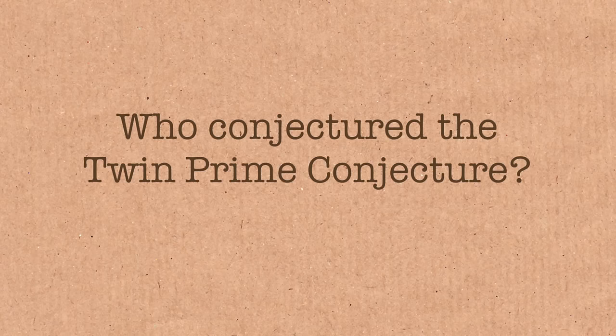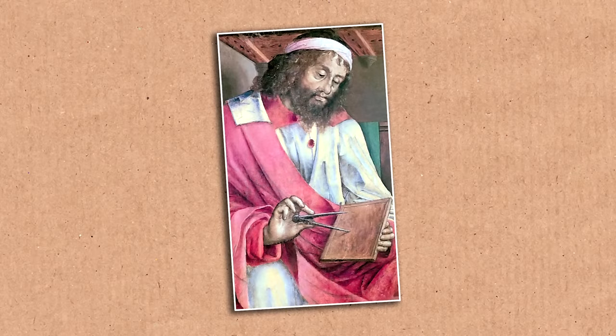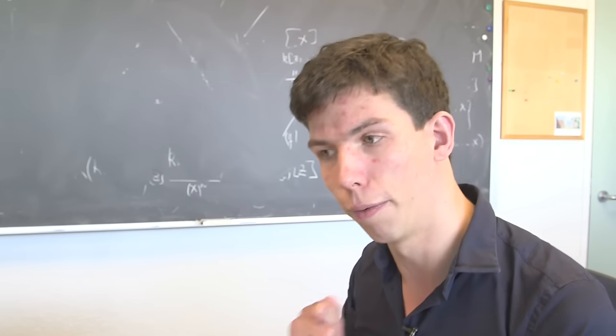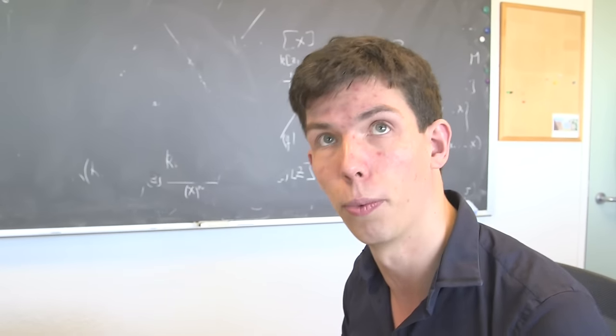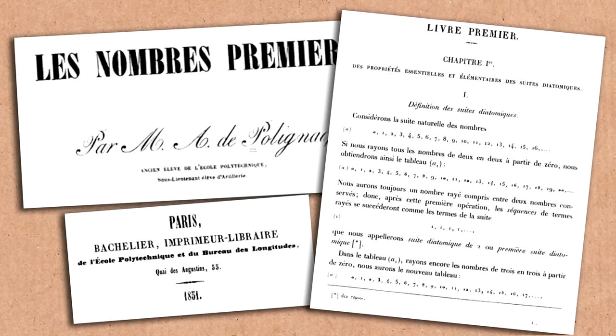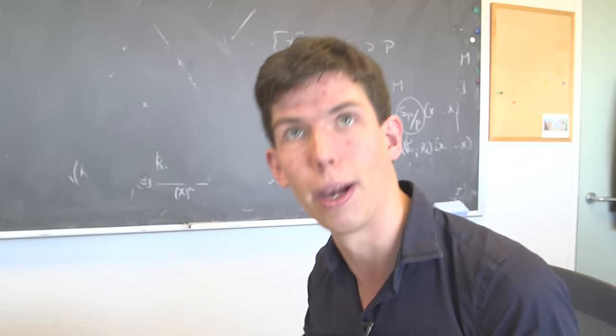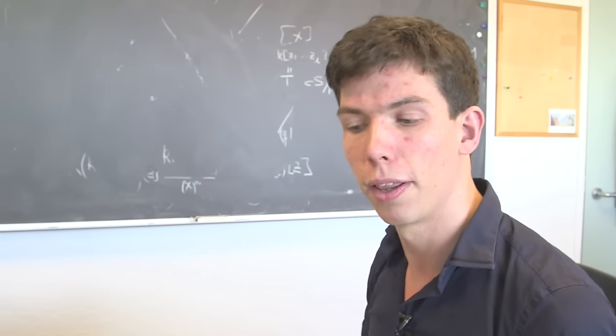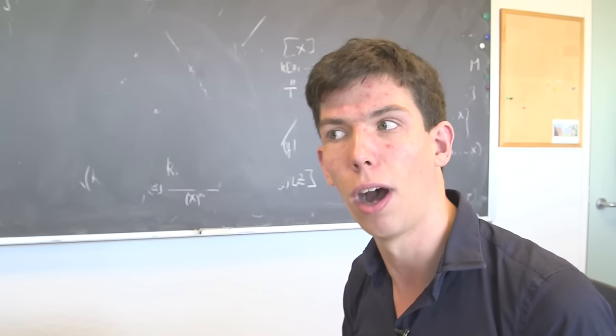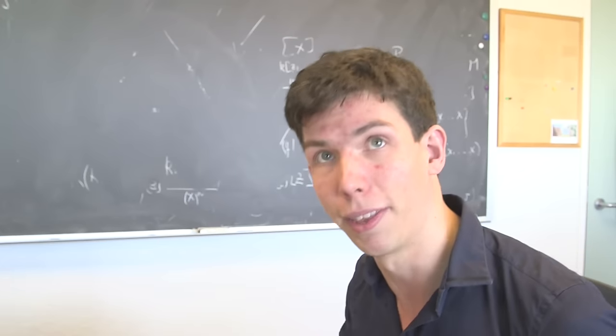We don't actually know how old the twin prime conjecture is. Some people have claimed it should go back to Euclid—it's certainly the kind of question the ancient Greeks could have thought about. The most recent time we've seen someone write down the conjecture officially was just over a hundred years ago by de Polignac, but he actually conjectured a more general form—not just gaps of size 2, but also 4 and 6. There's a suspicion the twin prime conjecture itself is rather older, but we know it's at least a hundred years old, possibly thousands.